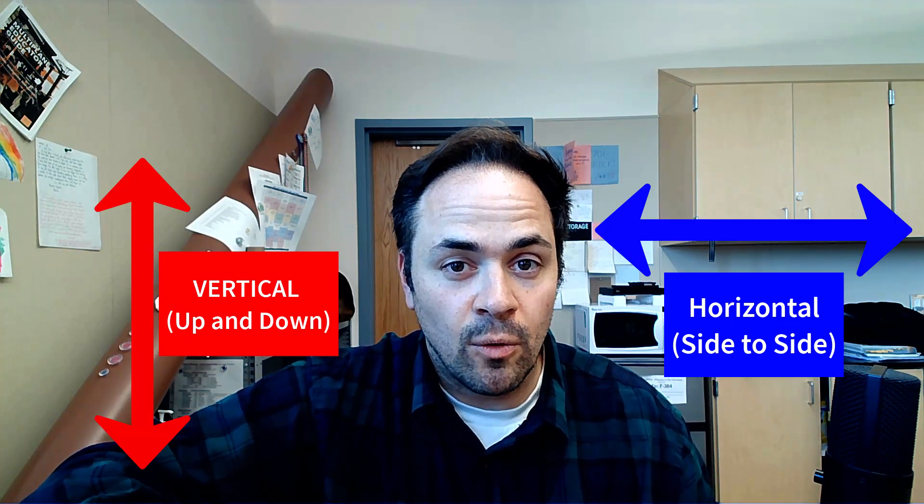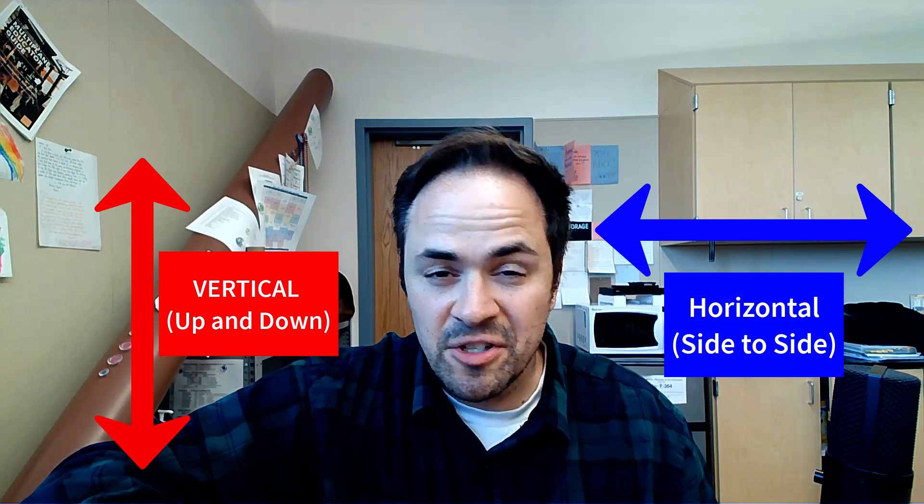But as weird as it is, it does work. We have things orbiting all over the universe, right? So it's got to make sense. Now to begin to understand this we need to start with something fundamental and that is the independence of vertical versus horizontal motion and forces. So let me show you some examples.